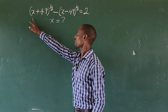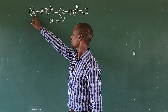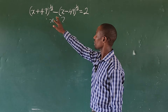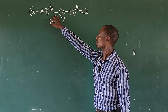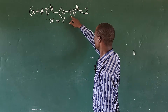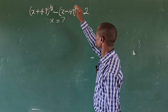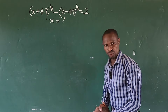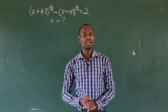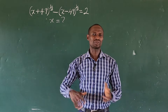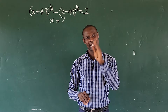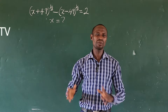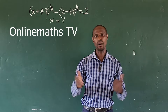Hi everyone, welcome to this class. Today we have another math problem on the board. How do we solve this challenge? The question is: (x + 49)^(1/3) minus (x - 49)^(1/3) equals 2. What would be the possible value of x that satisfies this challenge?